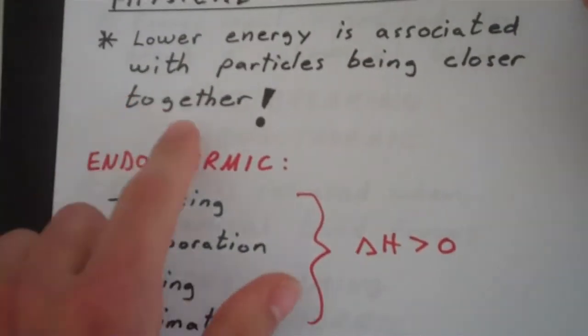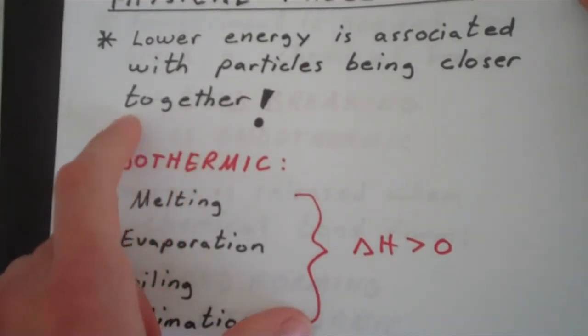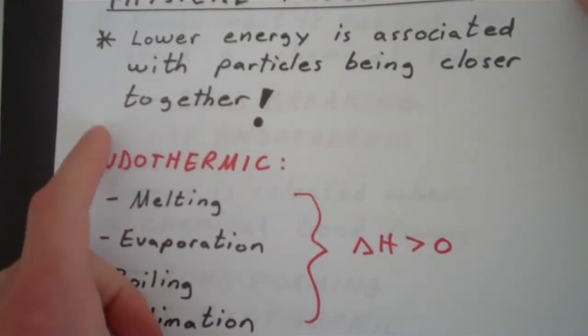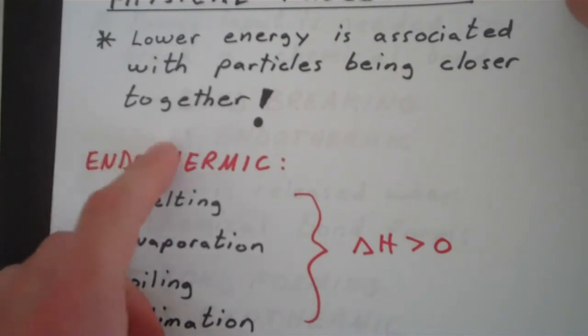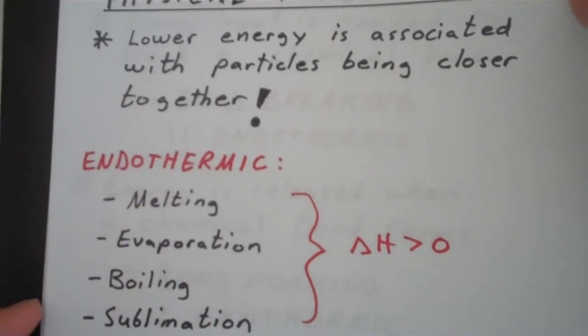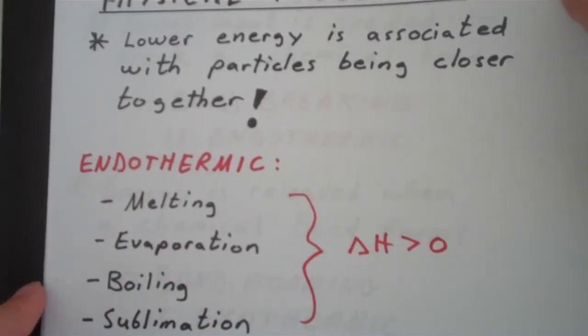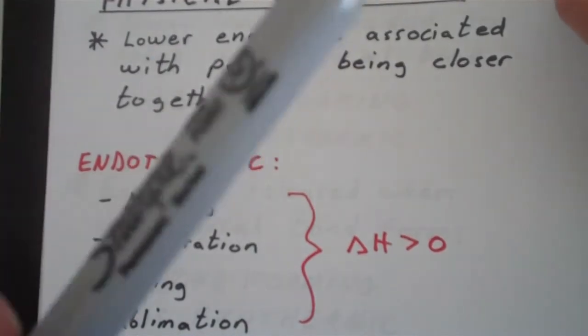As long as you remember this fact that there's a lower energy associated with the particles being closer together, and that, in general, chemical systems like to proceed towards a low energy, the lowest energy possible, that's why the pen falls down.